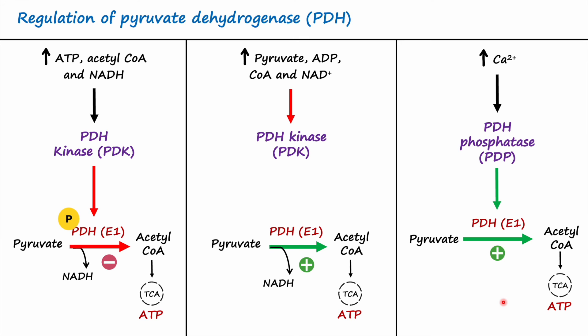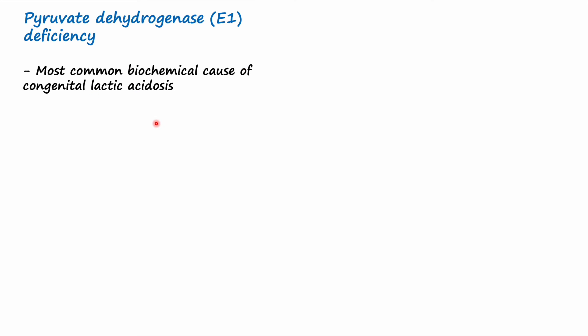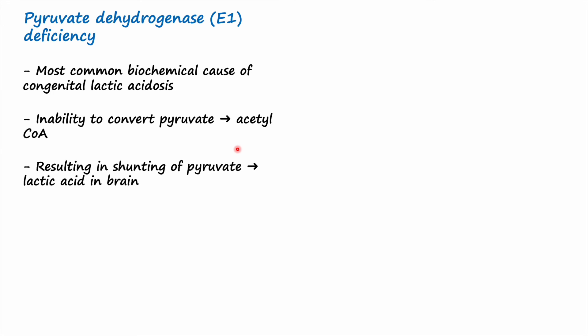The first clinical condition is pyruvate dehydrogenase deficiency, the most common biochemical cause of congenital lactic acidosis. Because the enzyme is deficient, it is unable to convert pyruvate into acetyl-CoA, so pyruvate is shunted into the formation of lactic acid in the brain. This is particularly relevant in the brain because the brain heavily relies on glucose to synthesize energy, and when the enzyme is deficient pyruvate cannot be converted to acetyl-CoA.